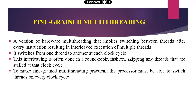In fine-grained multi-threading, thread switching means switching between threads — if any one thread is stalled, the control switches over to another thread. Fine-grained means it switches from one thread to another for every clock cycle. This interleaving is often done in a round-robin fashion, skipping any threads that are stalled. The processor must be able to switch threads on every clock cycle.